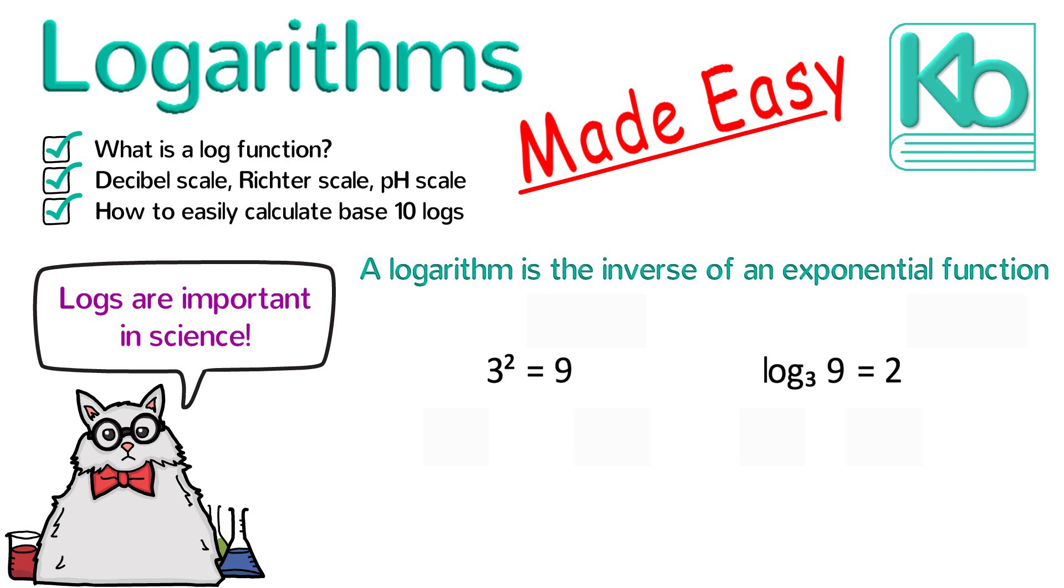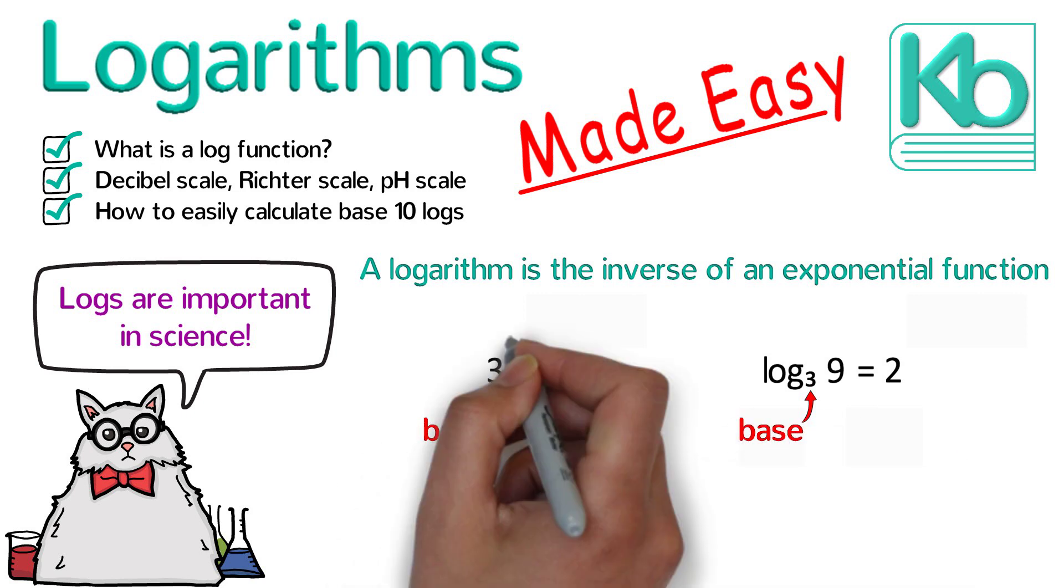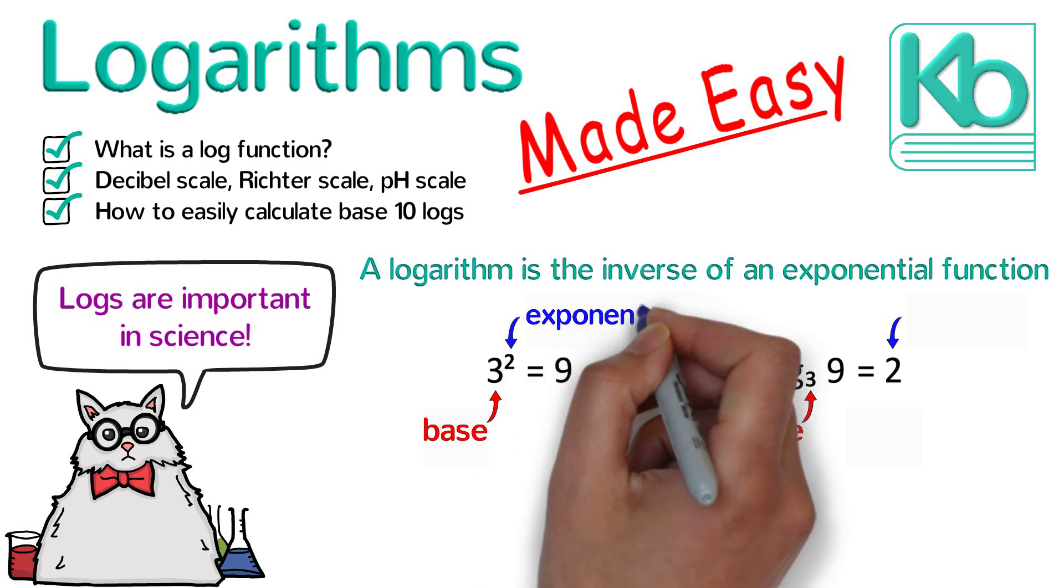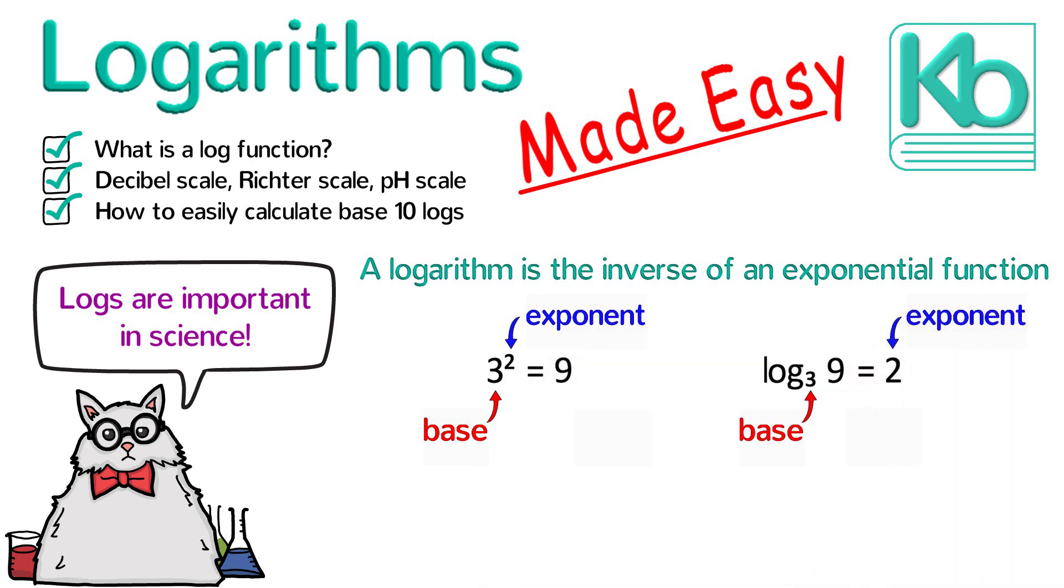In both expressions, the 3 is the base or the number that is multiplied by itself. The 2 is the exponent or the number of times the base is multiplied by itself. And the 9 is the result of the exponential function.